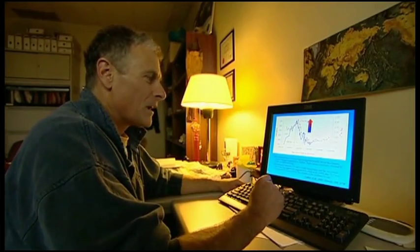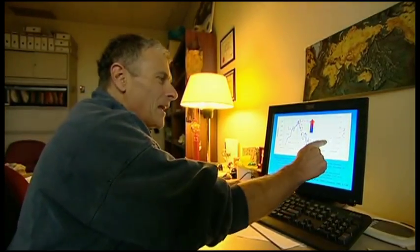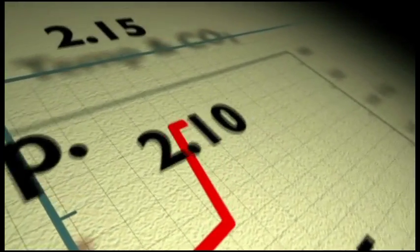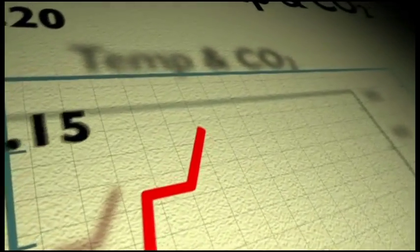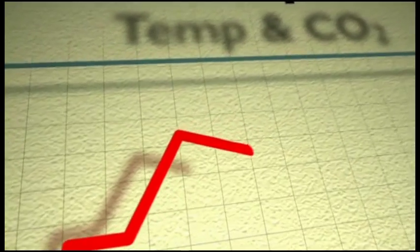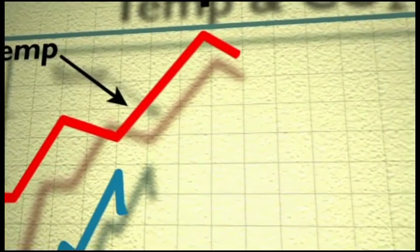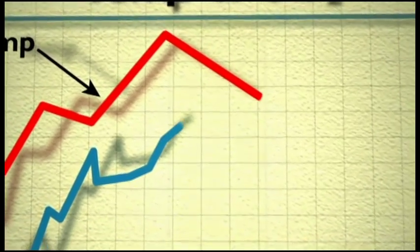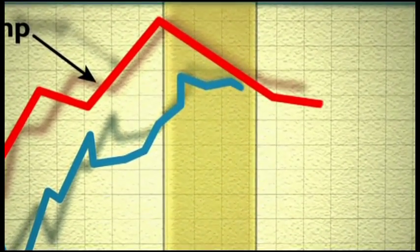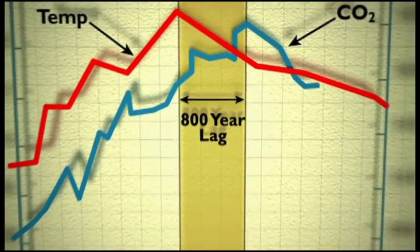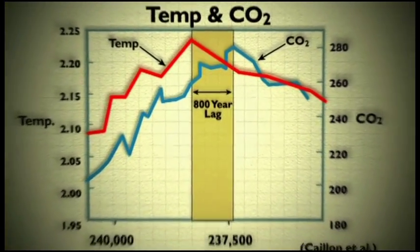Here we're looking at the ice core record from Vostok, and in the red we see temperature going up from early time to later time at a very key interval when we came out of a glaciation. And we see the temperature going up, and then we see the CO2 coming up. CO2 lags behind that increase. It's got an 800-year lag, so temperature is leading CO2 by 800 years.